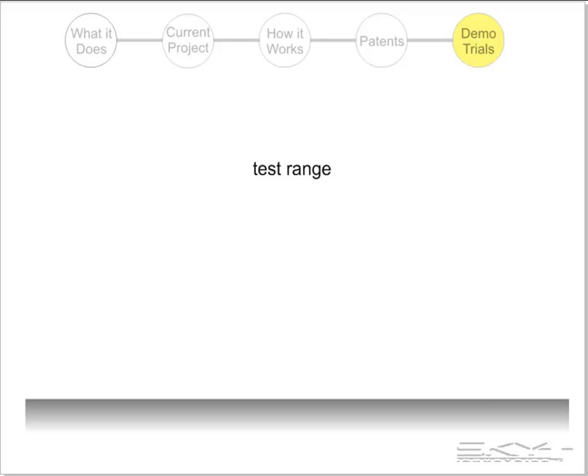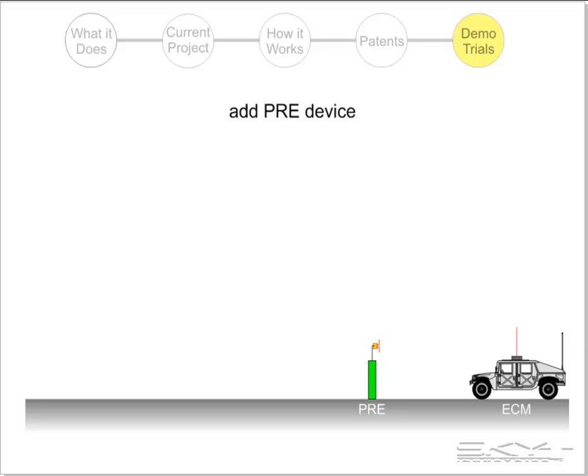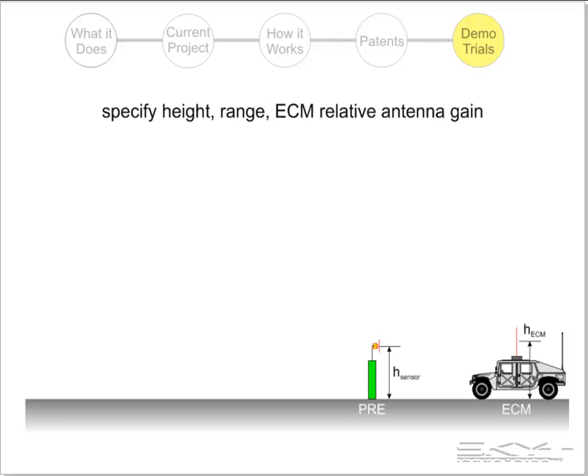We start with a flat test range, add ECM, and add the Protection Range Estimator device — which I'll call the PRE device for short. We then measure the heights of the ECM and PRE device antennas, and optionally also the range between them.